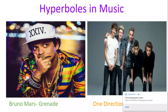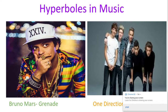Let's talk about hyperboles in music. The first song I'm going to play for you is Bruno Mars — it's called Grenade. Listen to the lyrics and then we'll talk about if there's a hyperbole there or not. So he says in that song, 'I'd catch a grenade for you, I'd jump in front of a train for you.' That's an obvious exaggeration — he wouldn't literally do those things. But what he's trying to say is, 'I love you so much, I would do anything for you.' That's how we would interpret those lyrics.